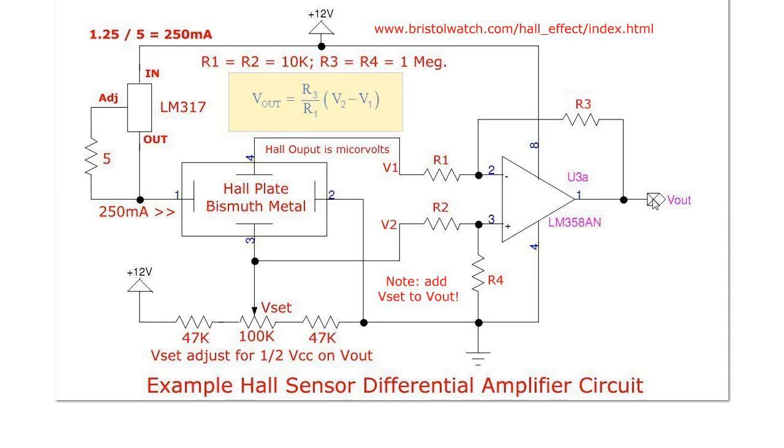I adjust V set with no magnetic field input so that I have half of VCC out. When I bring the magnet down in one direction, the V out would swing more positive. If I reverse the magnet, V out would go less positive. This is exactly how your ratiometric or linear Hall sensors work: Hall plate, some kind of current source or regulator, and a high gain differential amplifier.